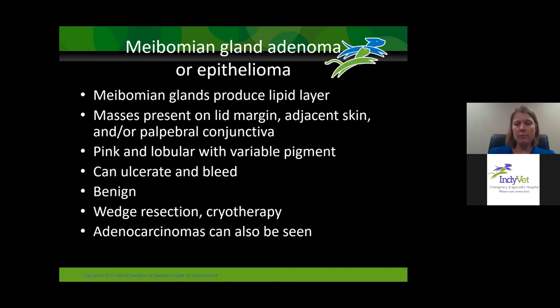They tend to be pink and lobular but can be variably pigmented. They can often ulcerate and bleed, especially when they've been there a long time — that's usually when the owner really starts having a problem. They're generally benign; you can see adenocarcinomas but that's not very common. Wedge resection and cryotherapy are our major ways of treating these adenomas.